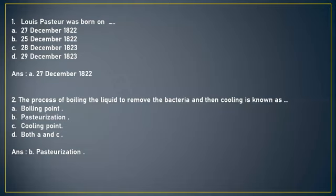The first question is: Louis Pasteur was born on (A) 27 December 1822, (B) 25 December 1822, (C) 28 December 1823, or (D) 29 December 1823. The answer is option A, 27 December 1822. Students, be very careful when selecting the years and dates. The answer is A, 27 December 1822.